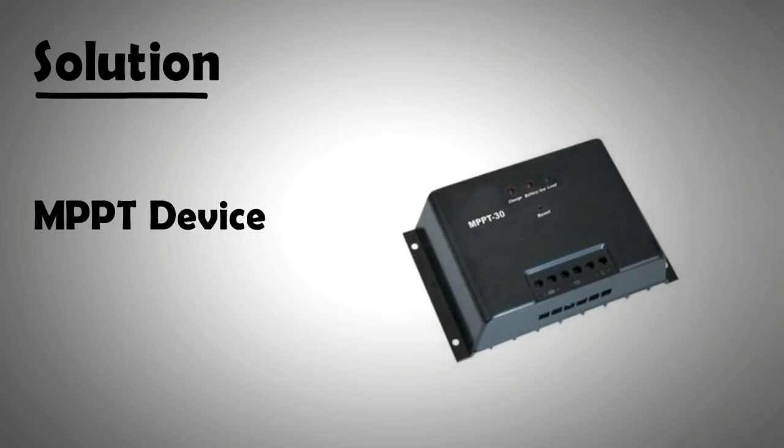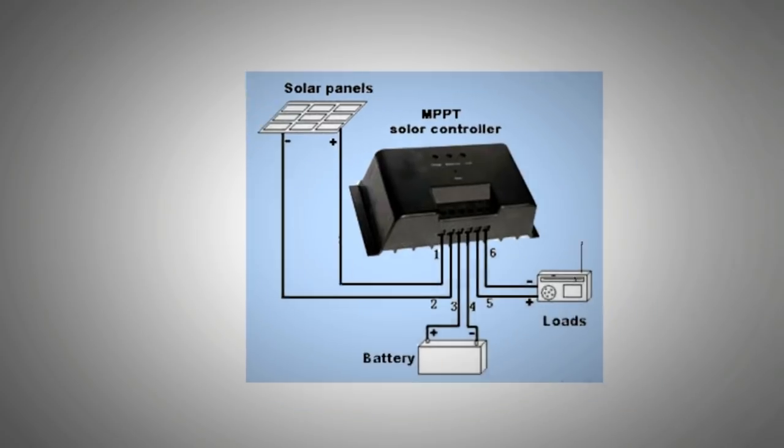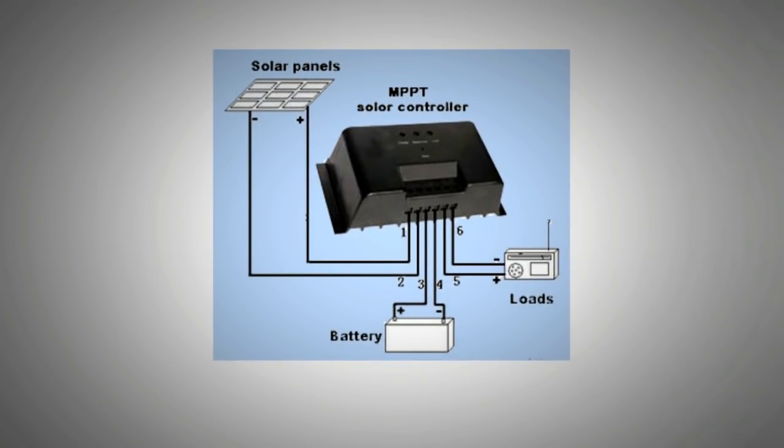So how does the MPPT device work? Well, the device isolates the load from the panel and shows the panel a resistance or impedance value that maximizes the power withdrawal from the panel.